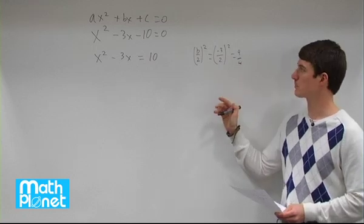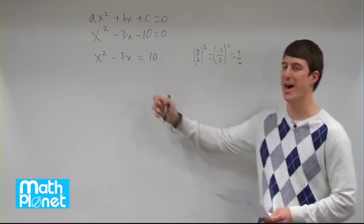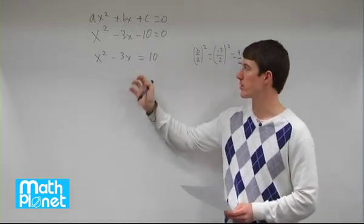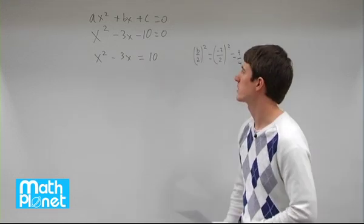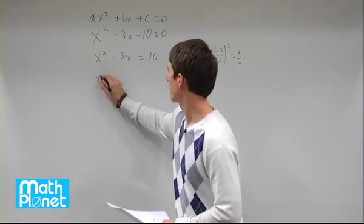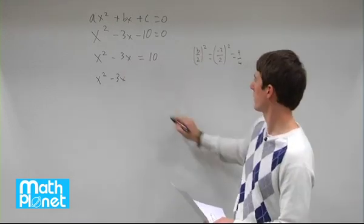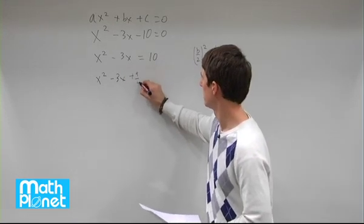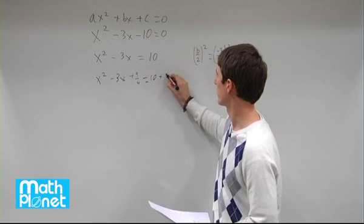We take this term. The third step is we take this term and we add that to both sides. Remember, you have to do the same thing to both sides. It's still an equation. So x squared minus 3x plus 9 fourths equals 10 plus 9 fourths.